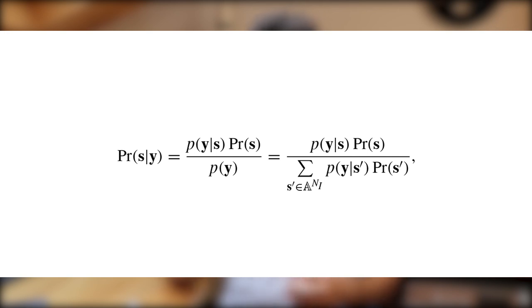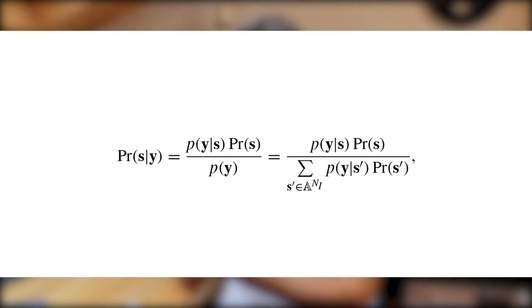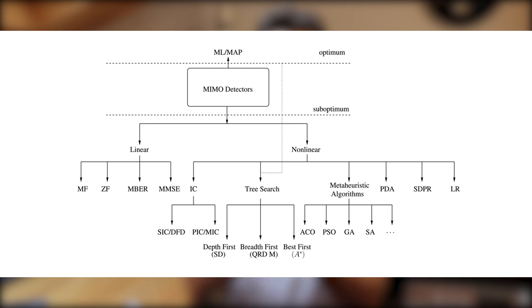So let's have a look at the different types of detectors. First of all, we have the optimum detectors, like maximum likelihood and maximum a priori. This detector uses a formula where we want to know the probability of a specific input given a specific output. But the main problem of these algorithms is their complexity, because with an increase in the number of users, we have an exponential increase in complexity that goes like 2 to the power of K, where K is the number of users.